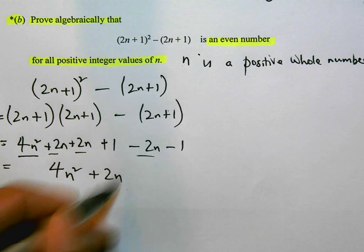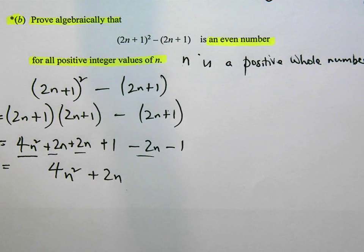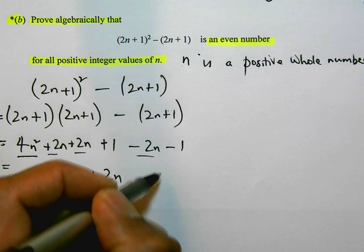As I said before, once I've expanded I just need to tidy it up. I'm going to factorize this and pull out a factor that can go into both of them. Now 2 can go into both 4 and 2.